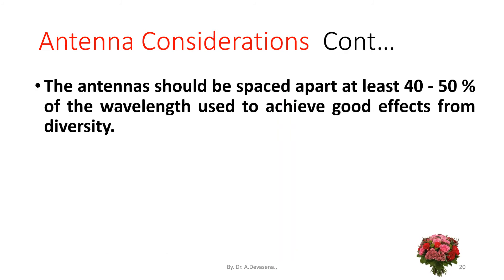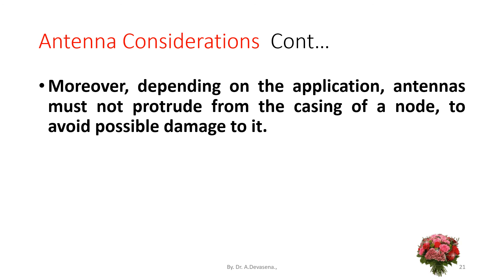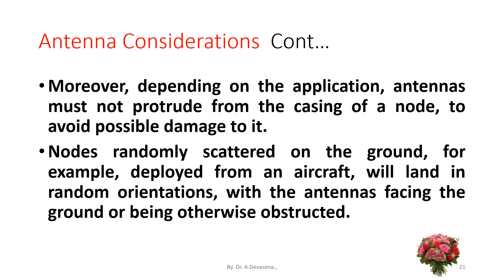Antennas should be spaced apart at least 40 to 50% of the wavelength used to achieve good effects from diversity. Radio waves emitted from an antenna close to the ground, typical in some applications, are faced with higher path loss coefficients than the common value of alpha equal to 2 for free space communications. Depending on the application, antennas must not protrude from the casing of a node to avoid possible damage. Nodes randomly scattered and deployed from an aircraft will land in random orientations with antennas facing the ground or being otherwise obstructed.